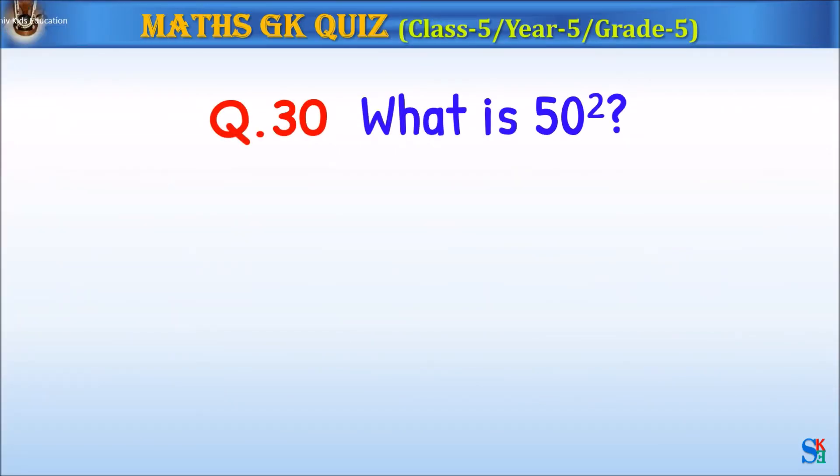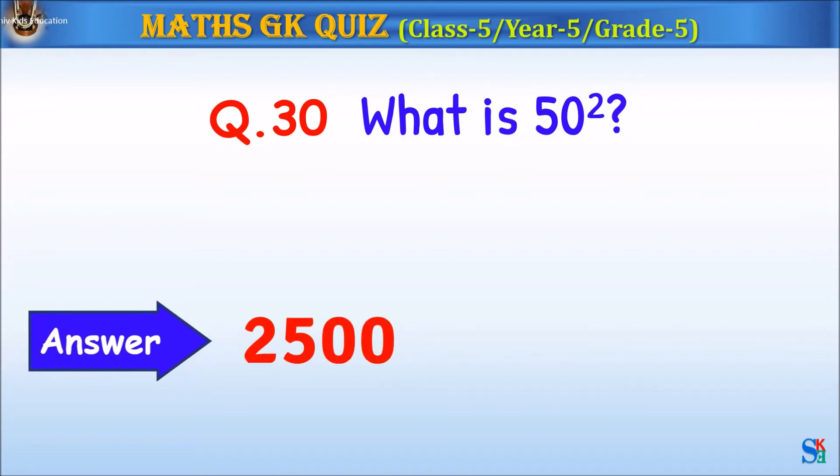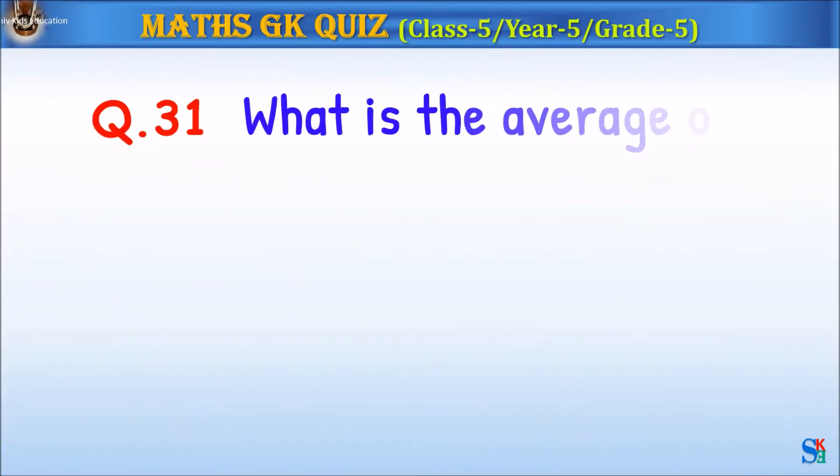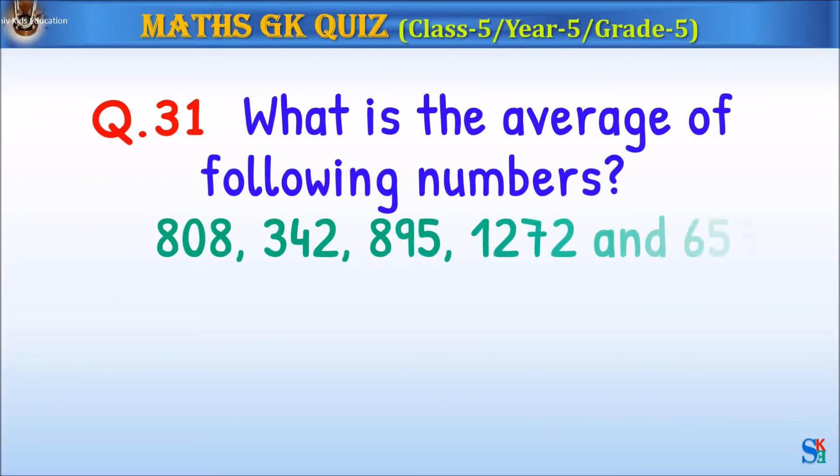Question 30: What is 50 squared? The answer is 2500. Question 31: What is the average of the following numbers?